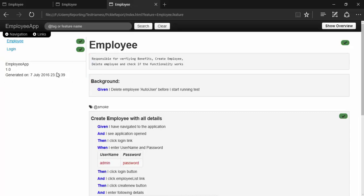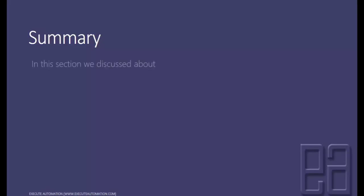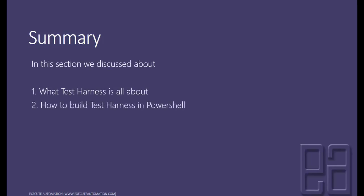This is how you can make use of parameters in PowerShell to pass them for your test harness script, and you can use the same concept in TeamCity, Team Foundation Server, and Jenkins for continuous integration testing. Thank you for watching. In this section we discussed what test harness is all about and how to implement it using PowerShell scripts.